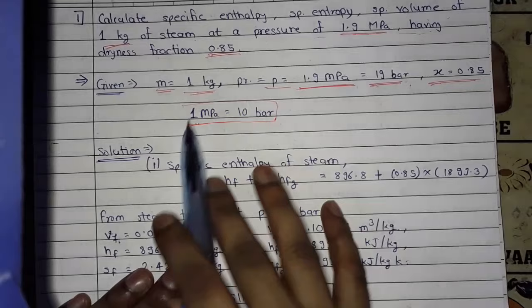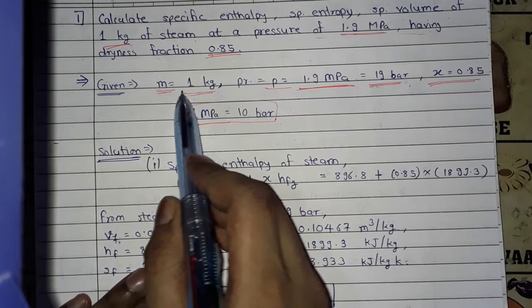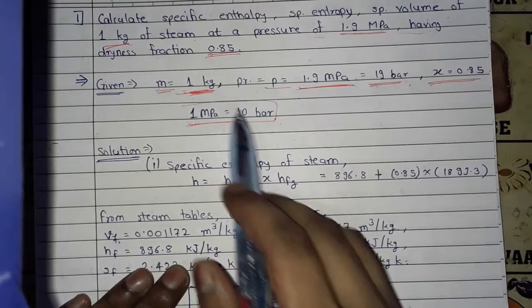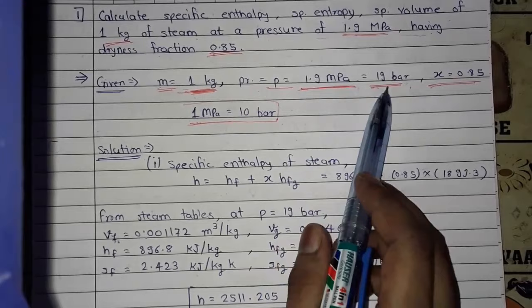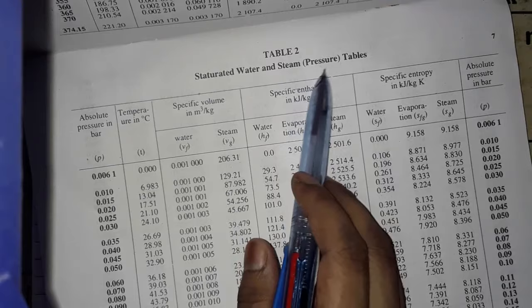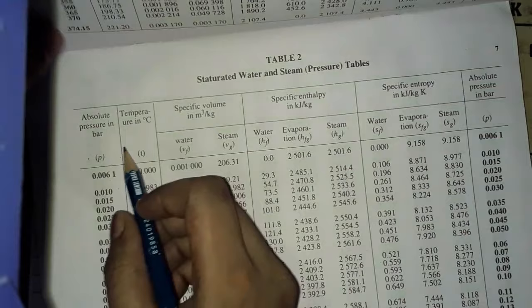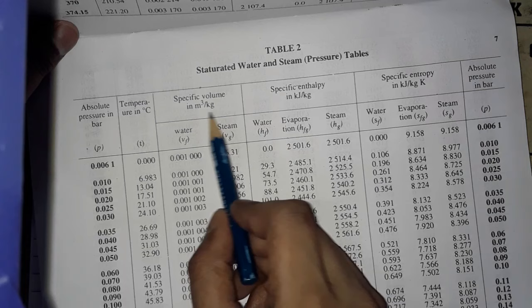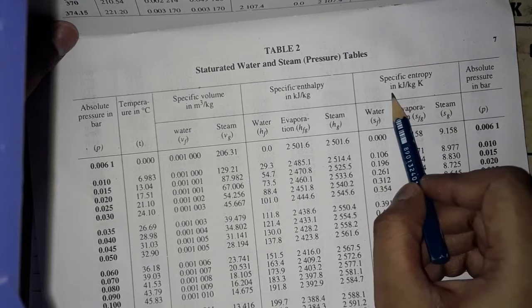In the next problem we will see the properties by considering mass, but here mass is 1 kg so it is on unit mass basis. We have pressure = 19 bar, so we use the pressure steam table — saturated water and steam tables using pressure. Pressure is in bar, temperature in degree Celsius, specific volume in meter cube per kg, specific enthalpy in kJ/kg, and specific entropy in kJ/kg·K.